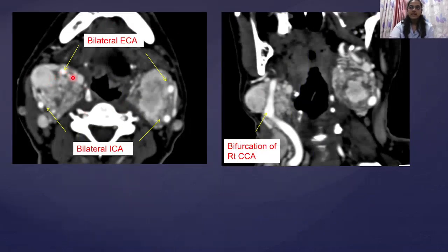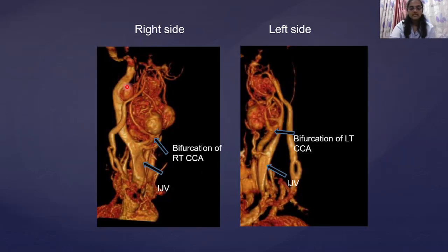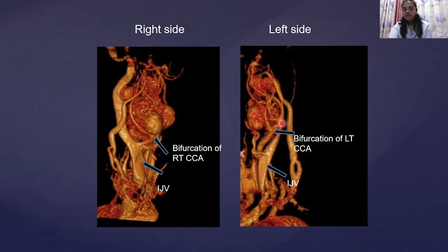The relation with the vessels was well appreciated: bilateral ECA were displaced anteriorly and bilateral ICA displaced posteriorly due to the encasing lesions. 3D images further demonstrated the bifurcation of the right common carotid artery with the carotid body tumor on the right side, along with superior lesions. The internal jugular vein and the bifurcation of the common carotid were also identified on these reconstructions.